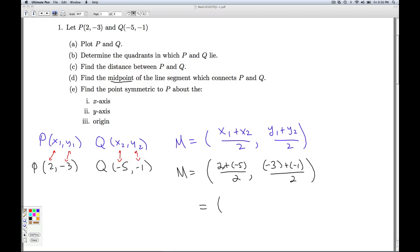And when we simplify, we get negative 3 over 2, or negative 3 halves, negative 4 over 2, negative 2. And something that you can do in the privacy of your own home is to go back to your plot of P and Q, draw the line segment that connects them, like we did in part C, and see if the midpoint, see if these coordinates really do describe the midpoint. So that'll do it for part D.